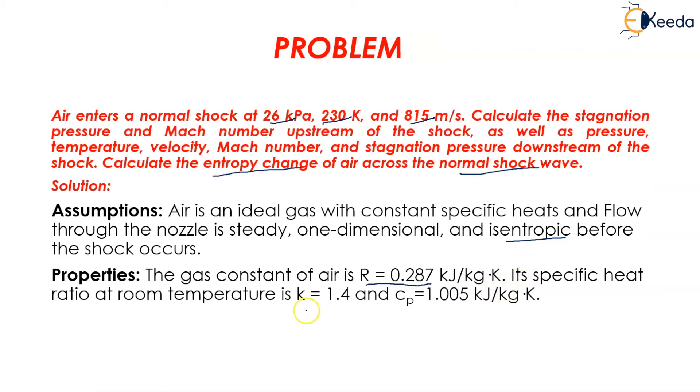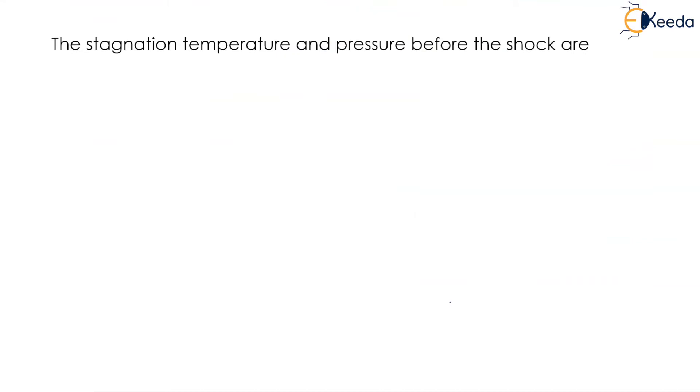K is 1.4 and Cp equals 1.005 kJ per kg Kelvin.